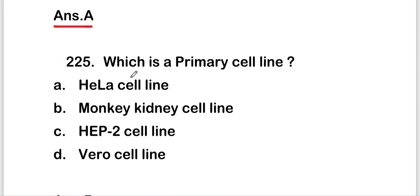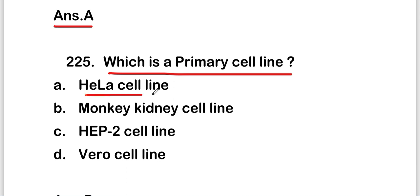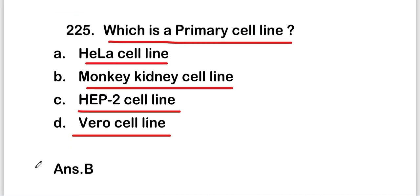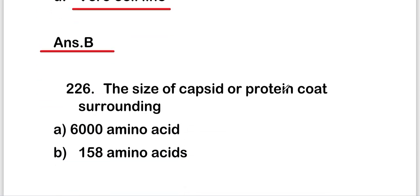The next question: which is a primary cell line? Options are HeLa cell line, monkey kidney cell line, Hep-2 cell line, or Vero cell line. The right answer is option B — monkey kidney cell line is a primary cell line.